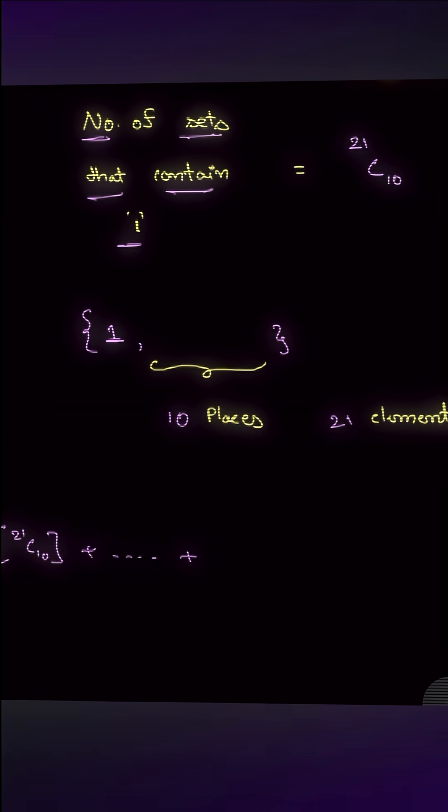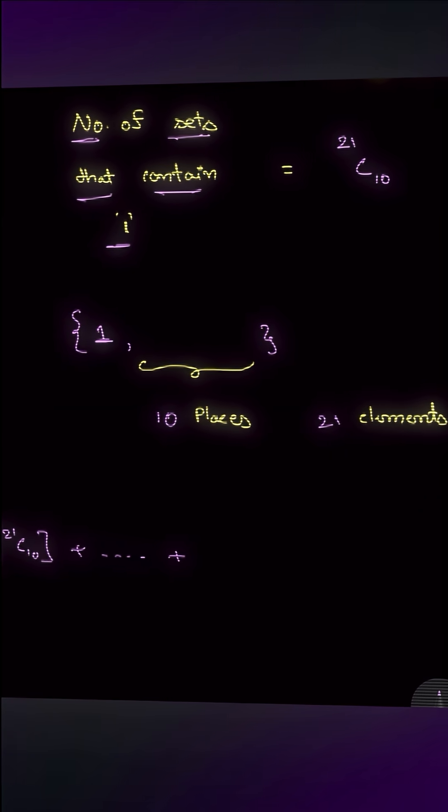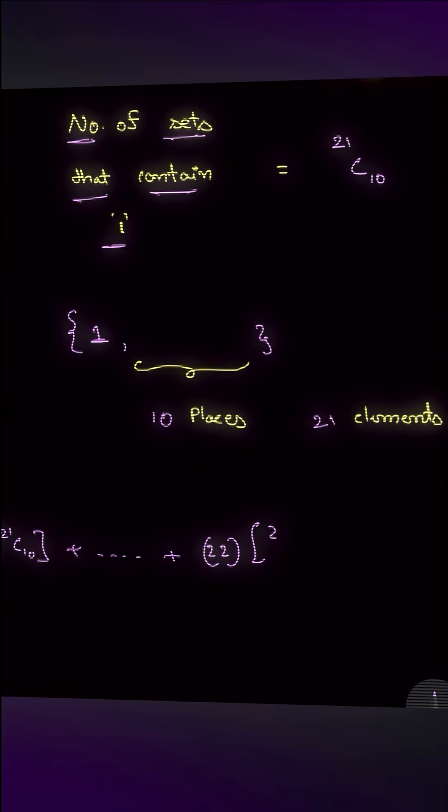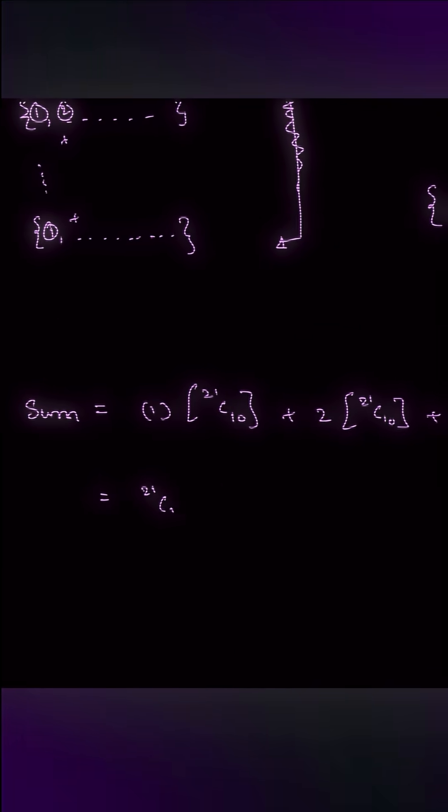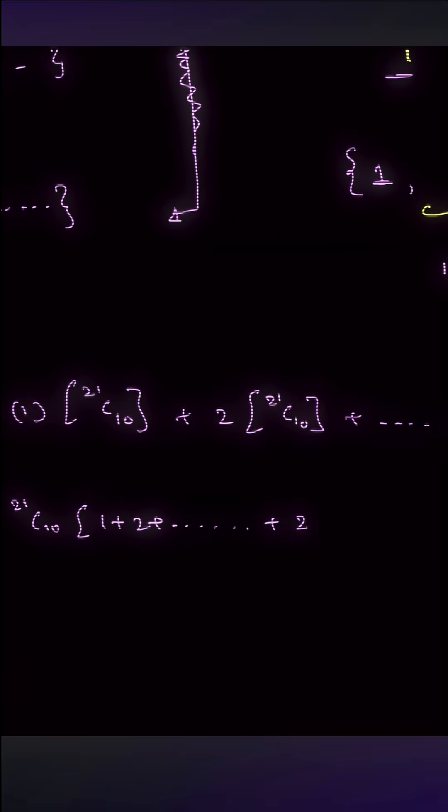Like that and so on. Every number will count 21C10 times, and that is how much it will be contributing to the total sum. So I will simply say it is 22 into 21C10. Here you just apply the sum of natural numbers formula to arrive at the answer.